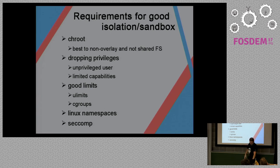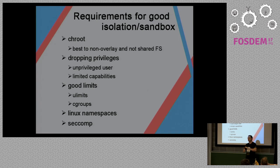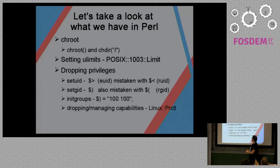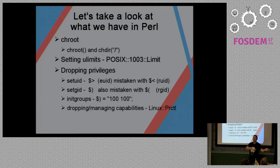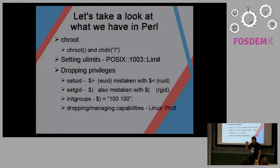You can add Linux namespaces to simply separate an application totally from other applications on your machine, which is essentially containerizing it. The last thing you can do is use seccomp, which is a filter for syscalls that your application can make. chroot is available out of the box in Perl, which is nice. One thing to remember is that after chrooting you have to do chdir, because if you don't, you're still outside the chroot directory and you still have access to files outside it. Setting ulimits is easy — you have those in the POSIX module.